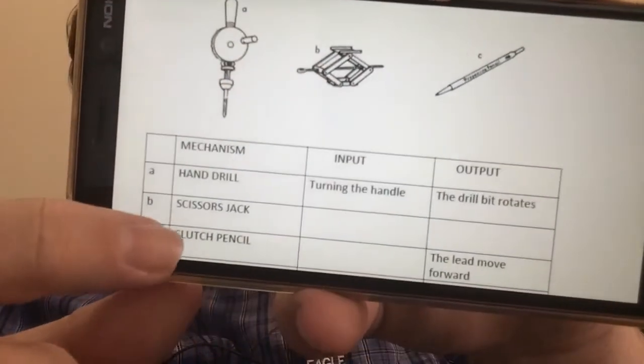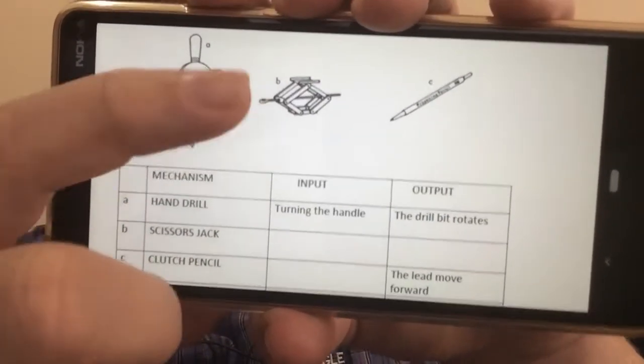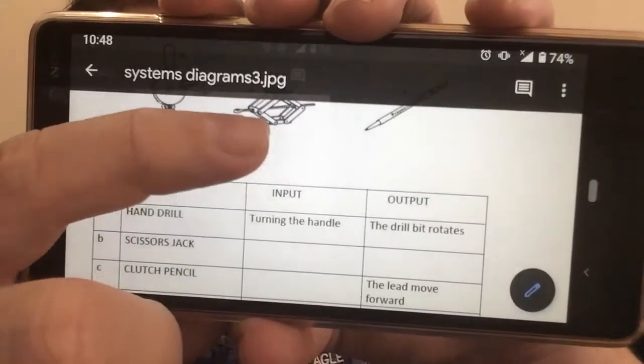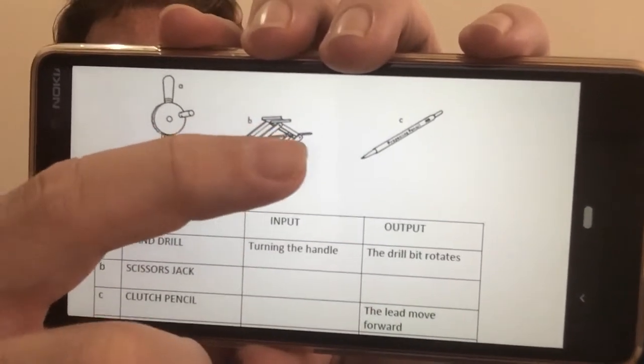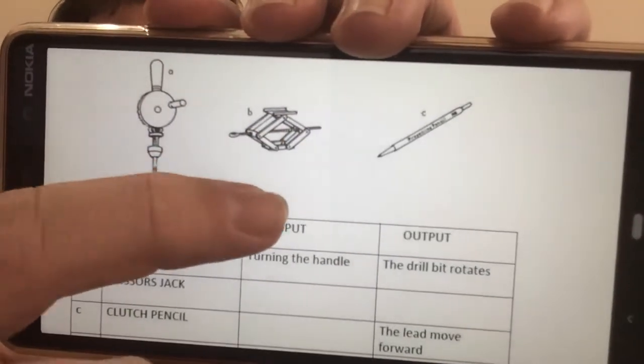The second example there is a scissor jack. Now, if you get the proper handle and you start to twist it, it will have some kind of output effect. What would happen? It would end up pulling this together and raising up the whole platform.